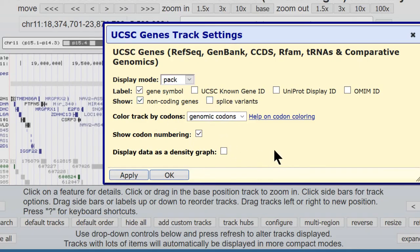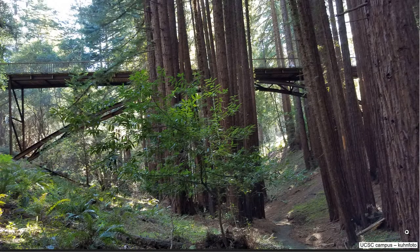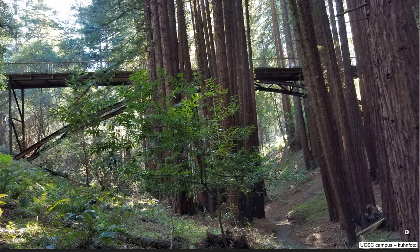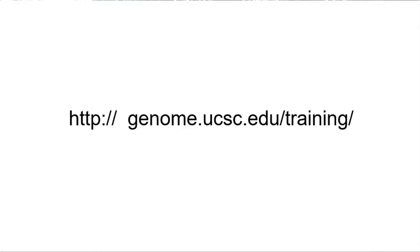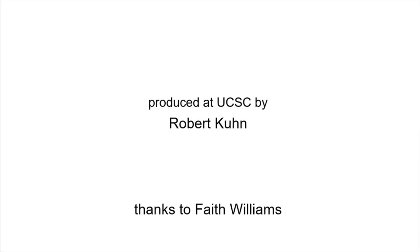That concludes part one of the basic browser video series, which has primarily focused on the many ways accession names from a variety of datasets and data types can be used to find your way around the genome. There are other accession names that work as well — the best advice is to just give it a try in the position box. We will start part two at the same genomic location. To make it easy to find that location again, we will save the configuration for easy access — the saved sessions feature is the subject of a separate video in the UCSC browser video collection. Please note that we conduct full-day and two-day on-site trainings at your institutions — visit genome.ucsc.edu/training. Thanks for watching, and thanks for being a UCSC Genome Browser user.